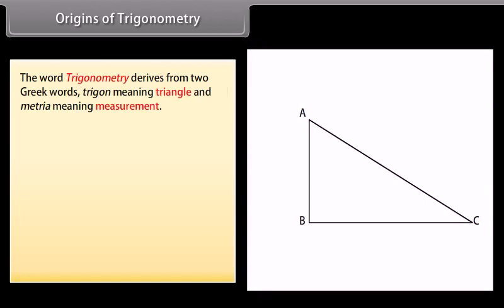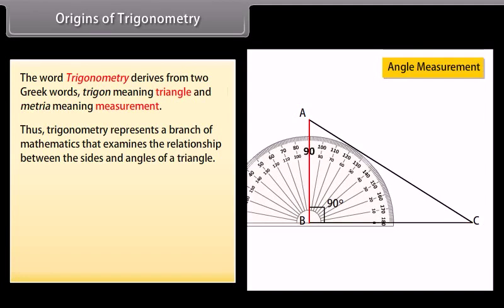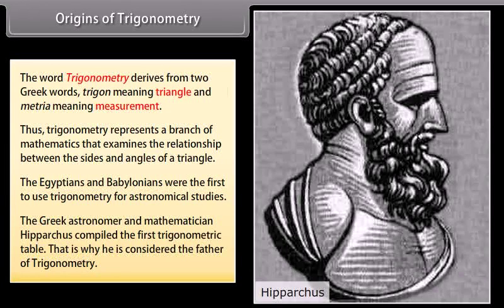Origins of trigonometry. The word trigonometry derives from two Greek words: trigon, meaning triangle, and metria, meaning measurement. Thus, trigonometry represents a branch of mathematics that examines the relationship between the sides and angles of a triangle. The Egyptians and Babylonians were the first to use trigonometry for astronomical studies. The Greek astronomer and mathematician Hipparchus compiled the first trigonometric table, which is why he is considered the father of trigonometry.